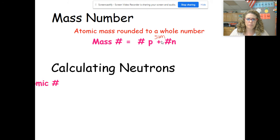So how do we figure out the neutrons? The number of neutrons is going to be our mass number minus the atomic number, because the atomic number plus neutrons equals the mass. So if I have the mass and the atomic number, I subtract to get the number of neutrons.